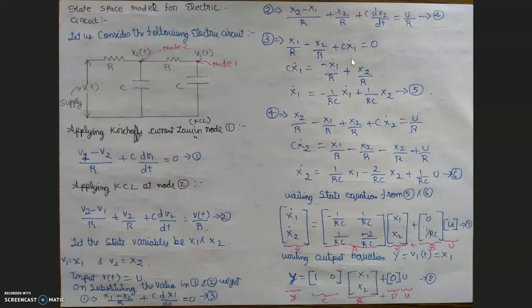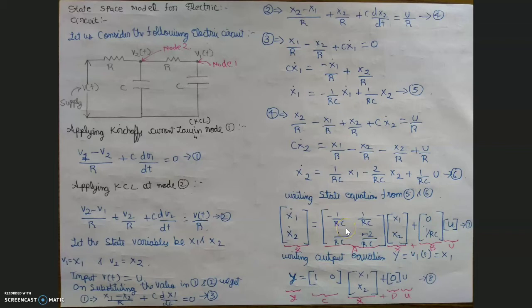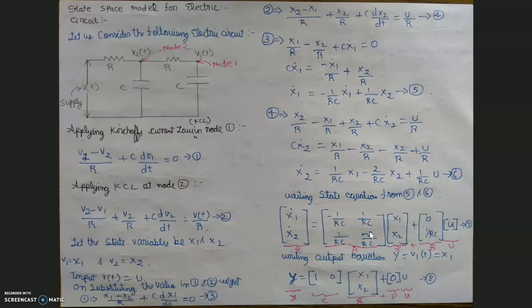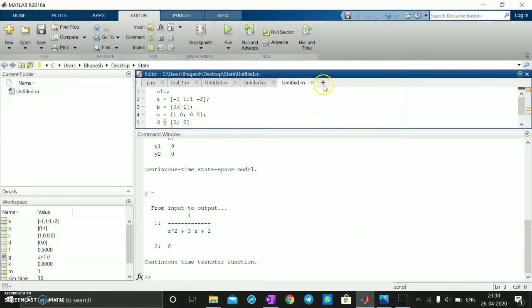Now we apply this in MATLAB. In MATLAB we can easily define the state space model just by knowing matrices 7 and 8 — that is, matrices A, B, C, and D. I'll assume values for R and C: R equals 1 ohm and C equals 1 farad. With these values, the A matrix entries become -1, 1, 1, -2.